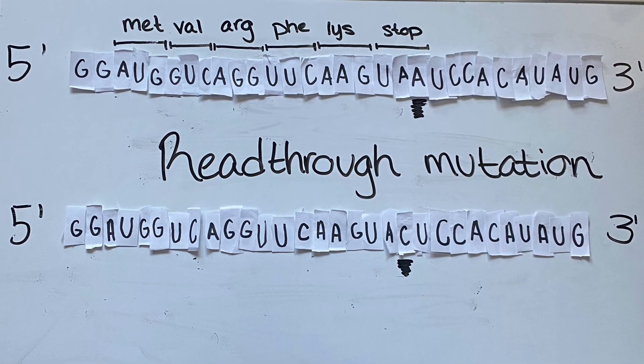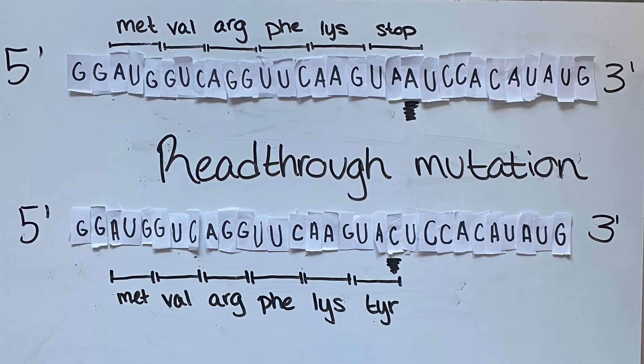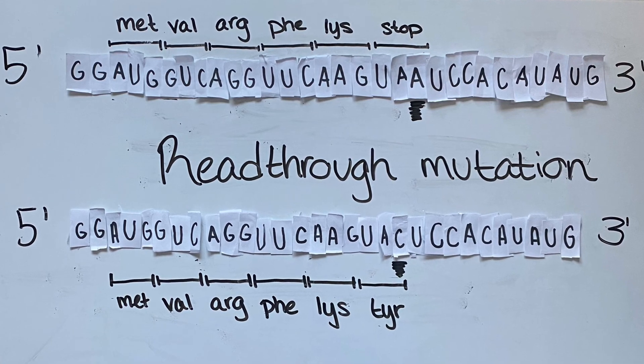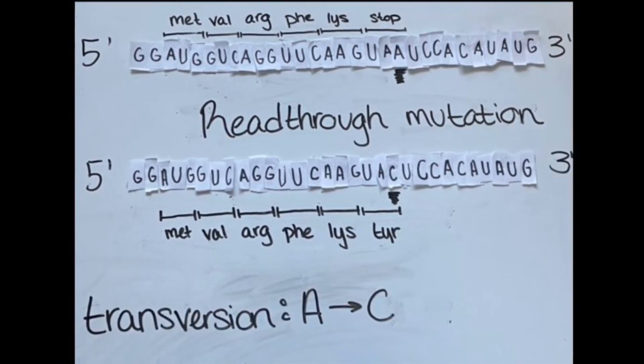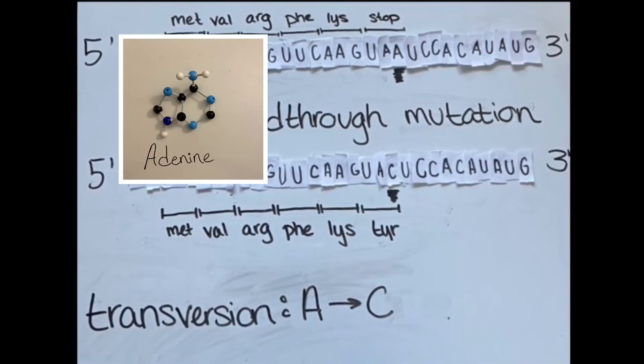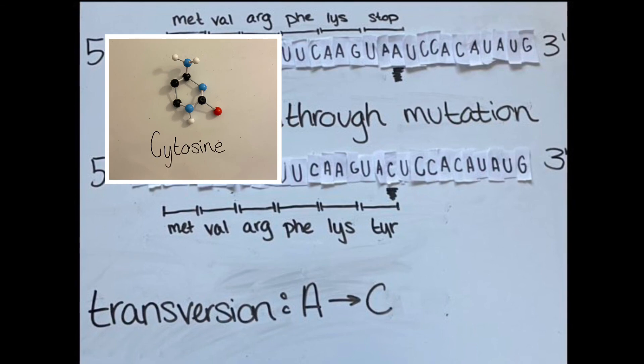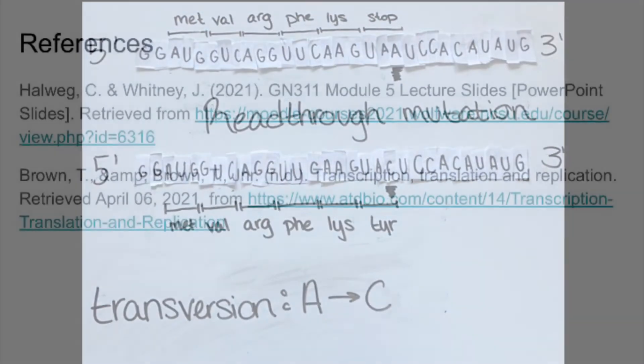Lastly is the read-through mutation where the stop codon is changed to tyrosine. This would create a longer A1 protein produced from the amino acids. Once again, this would be a transversion since the base change is from a purine to a pyrimidine.